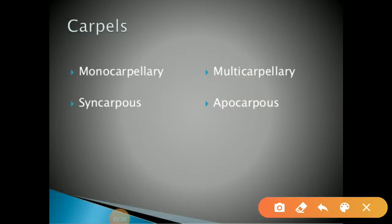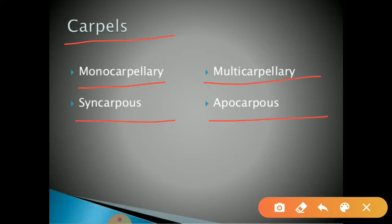Next we can learn the types of carpels. There are four types of carpel in a flower: monocarpillary, multicarpillary, syncarpus, and apocarpus. First, monocarpillary — if the gynaecium consists of a single carpel, that carpel we can call as monocarpillary.